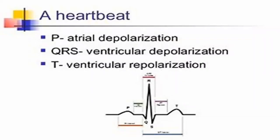Let's talk about what's happening with each heartbeat. You have your PQRST — when the atria contract, it writes your P wave; when the ventricles contract, it writes your QRS wave; and when the ventricles relax again, it writes your T wave on the EKG strip.